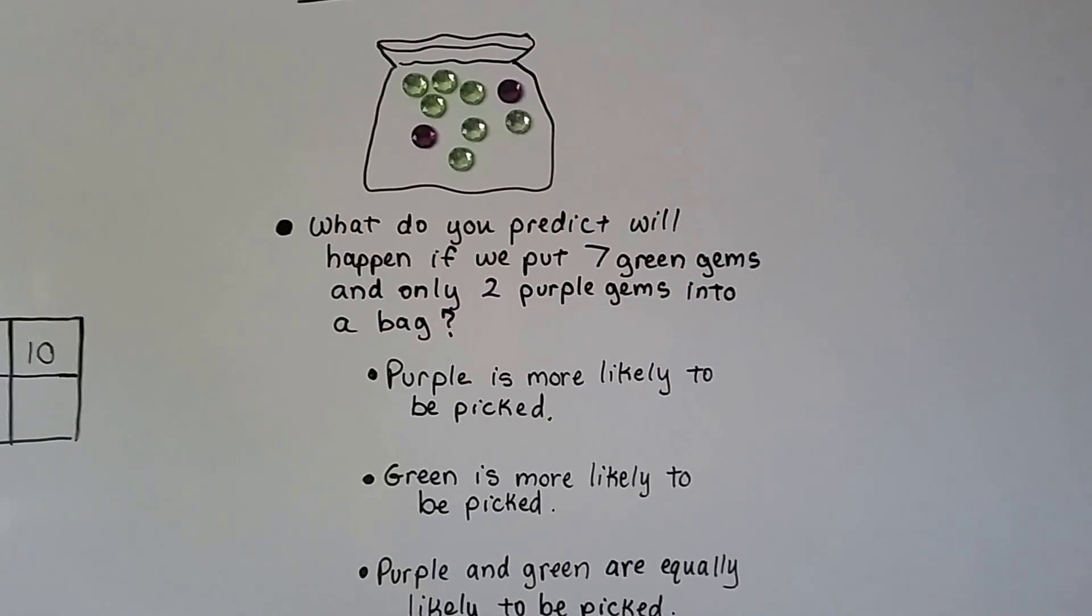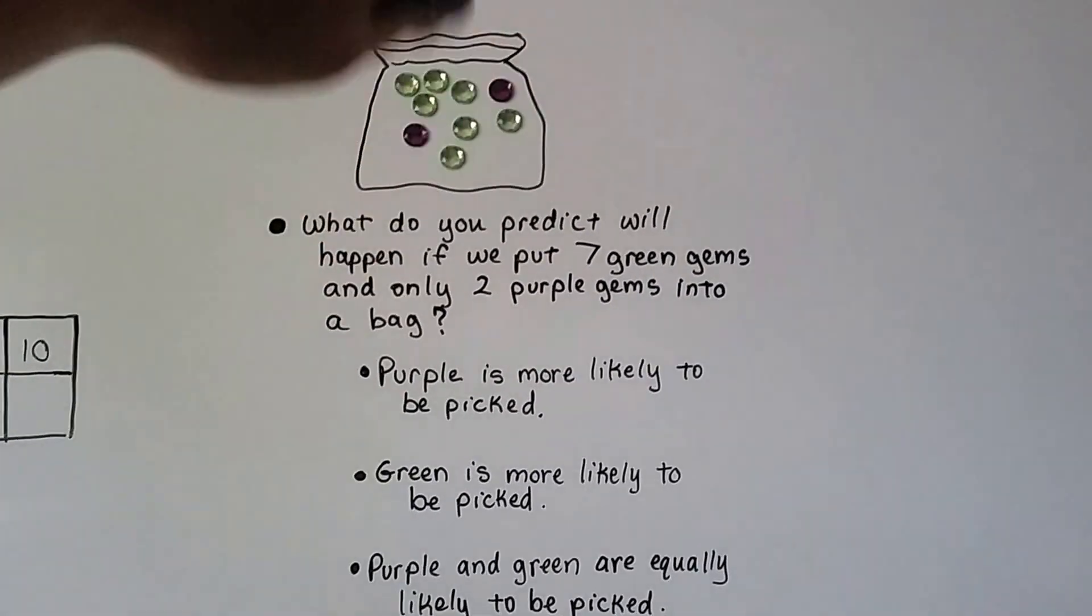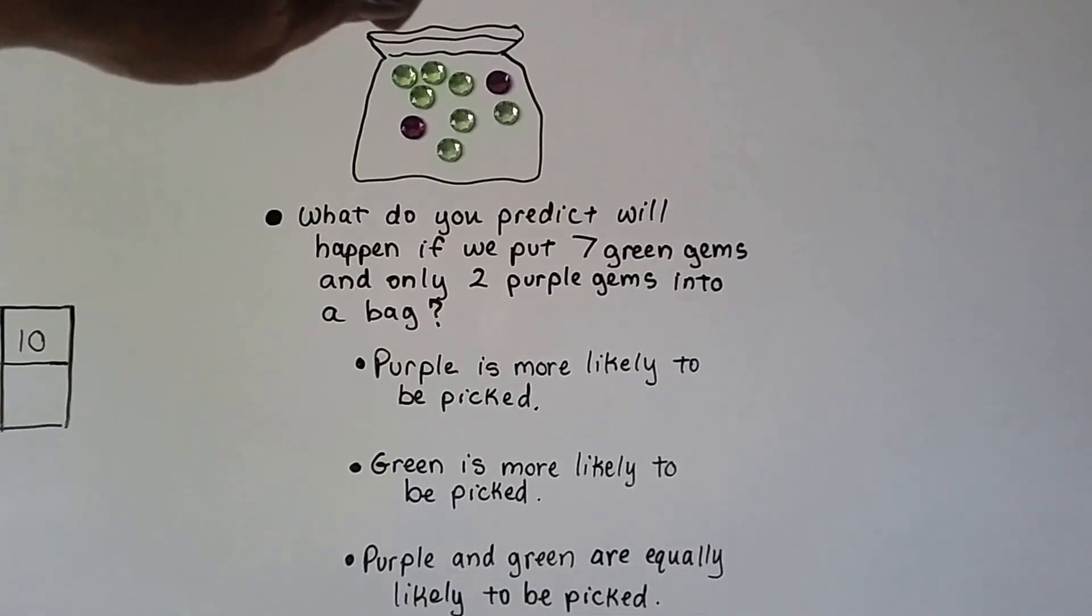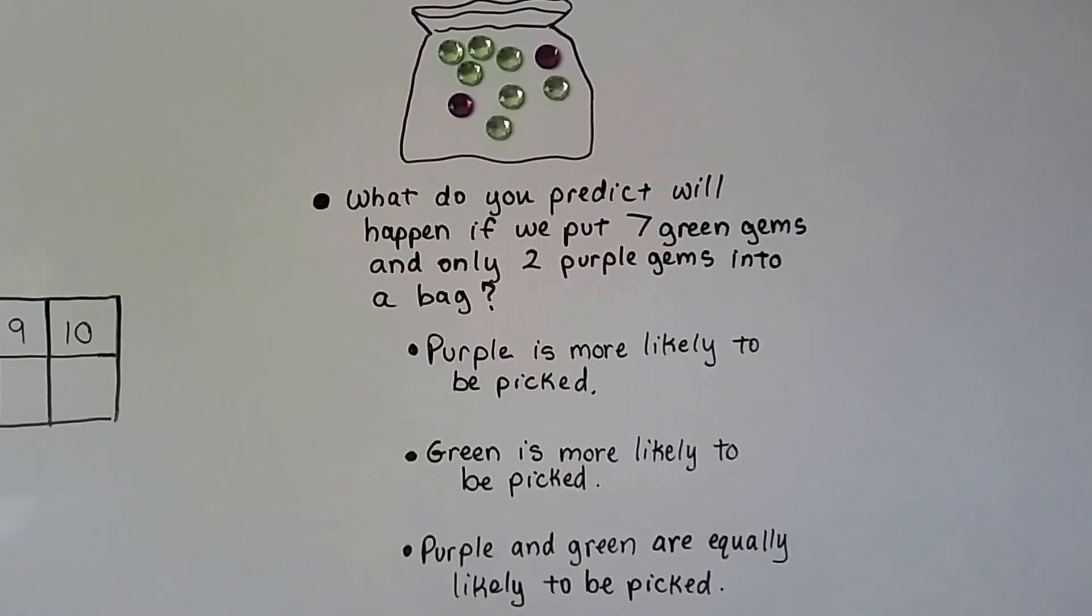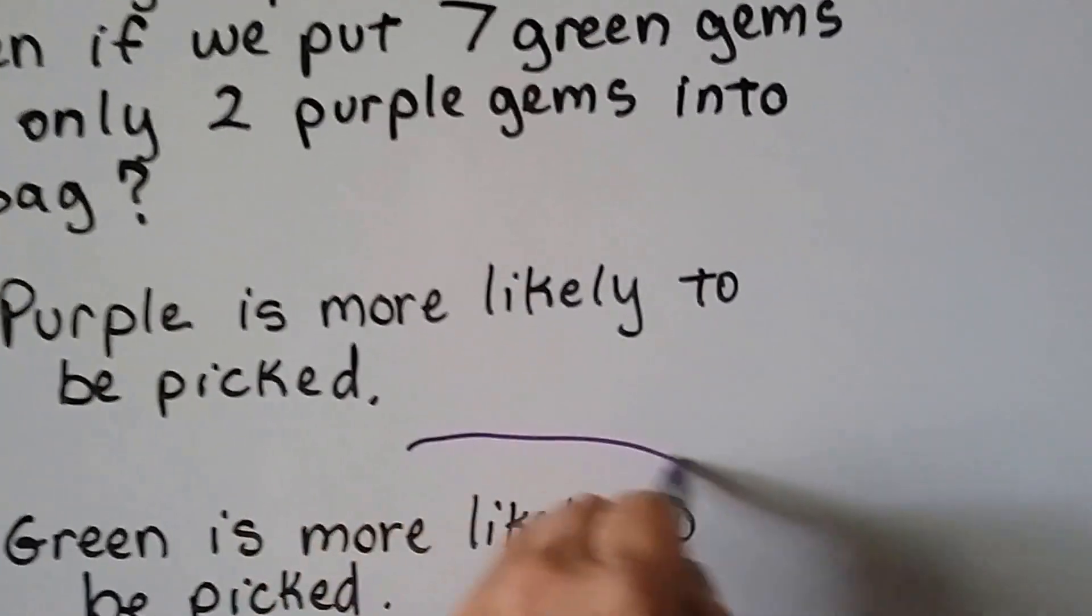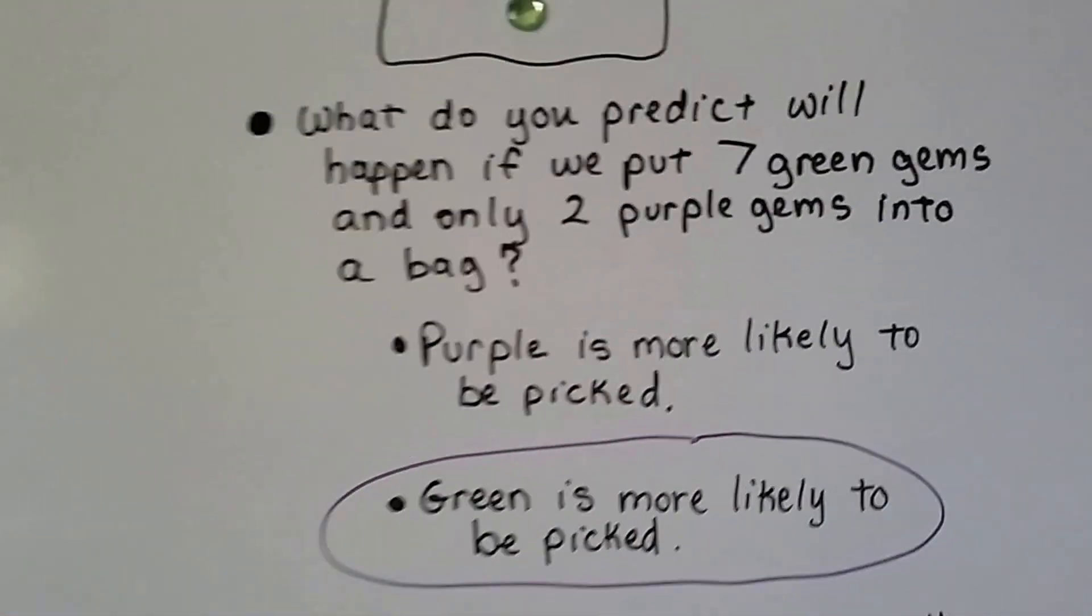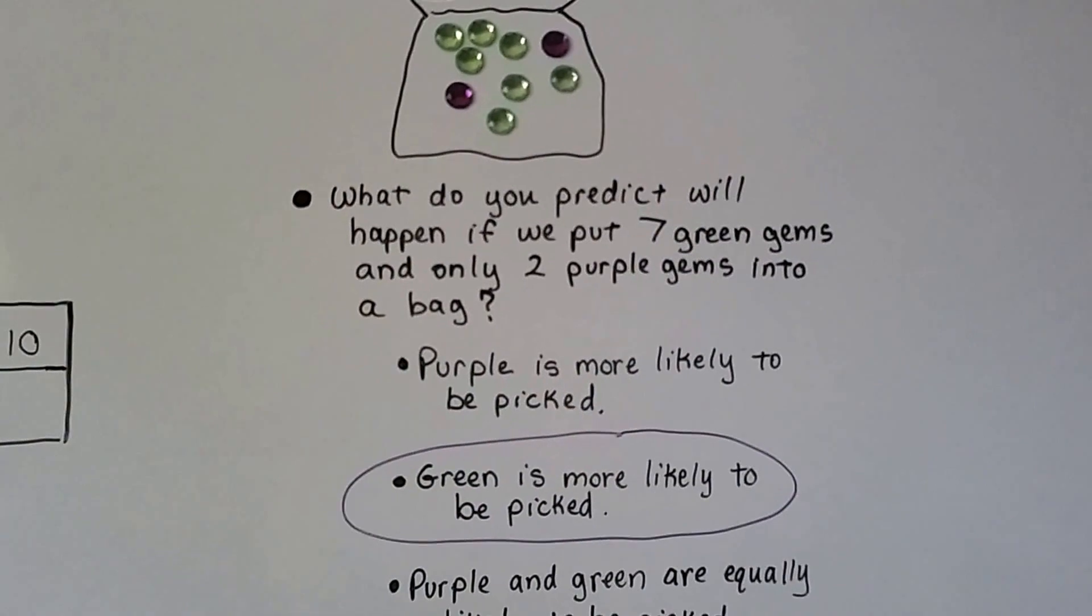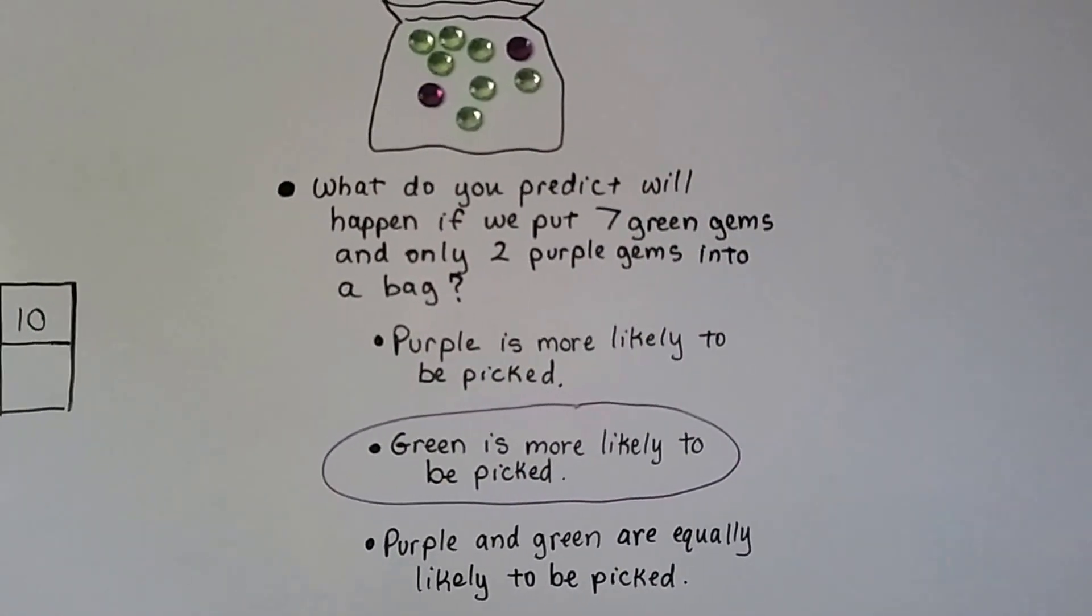Well, there's a lot more green ones, right? So, if we closed our eyes and stuck our hand in that bag, we have more of a chance of picking a green one because there's more green ones, right? So, if you think green is more likely to be picked, you're right. There's more green, so we have a bigger chance of picking green, don't we? There's not that many purple ones, so our chance of picking a purple one is not very high, alright?